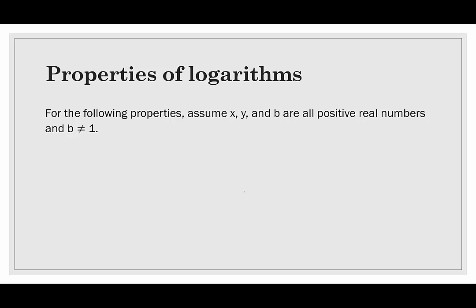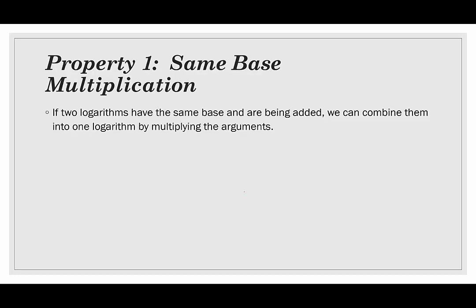So, the properties of logarithms — we need to make a few assumptions. For each of the properties, we're going to assume that X, Y, and B are all positive real numbers, and B does not equal 1. Our first property is the same base multiplication property. This says if two logarithms have the same base and are being added, we can combine them into one logarithm by multiplying the arguments. So, if we have log base B of X plus log base B of Y, we can combine this into a single logarithm: log base B of X times Y.